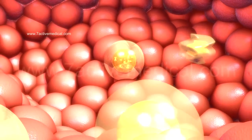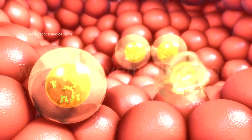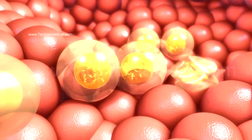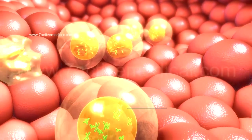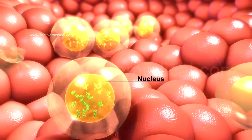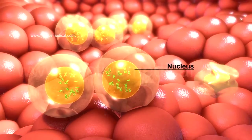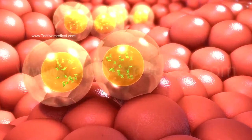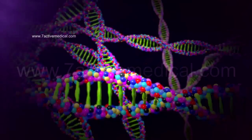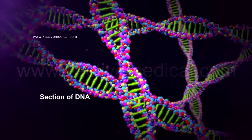Cells in the body grow and divide according to the normal cell cycle, which is controlled by the nucleus. The genetic material or DNA inside the nucleus contains the information necessary to execute this process.